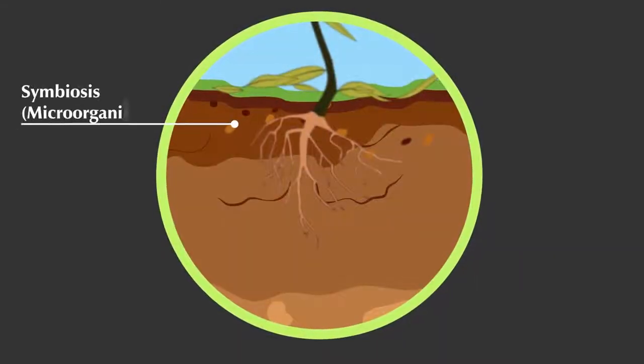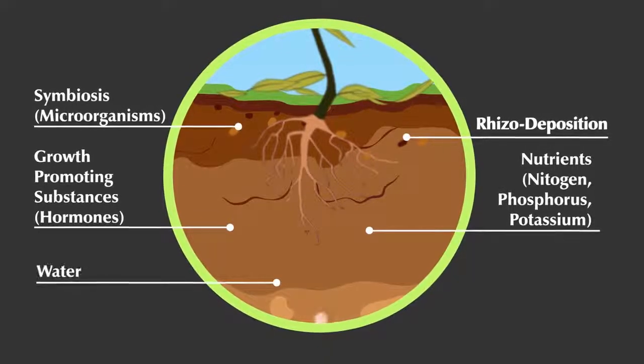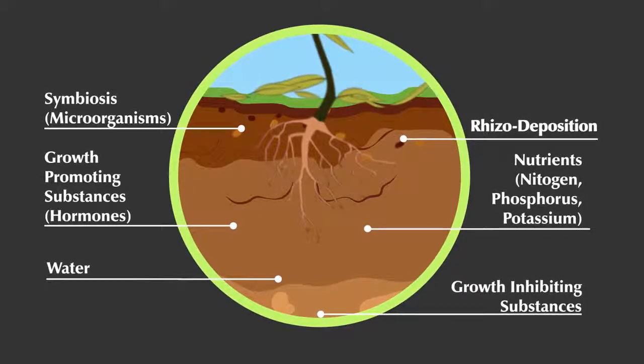The microorganisms that occupy the rhizosphere exist in a symbiotic relationship with the plant, dynamically influenced and responding to the chemicals the plant releases through its roots.